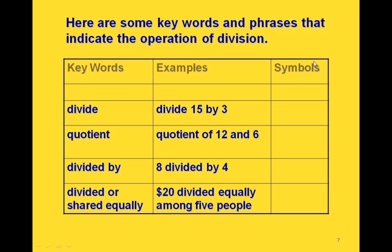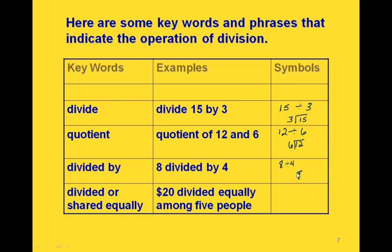Here are some keywords and phrases that signal we need to use division in a problem. If we say we want to divide 15 by 3, that means the 15 comes first — we could write it this way, or using our division symbol, we would write it this way. The quotient of 12 and 6 — again the 12 comes first if writing it with a division symbol, or if we write it in long division form, the 12 goes underneath. 8 divided by 4 — we could write it this way or with the 8 underneath and the 4 outside.